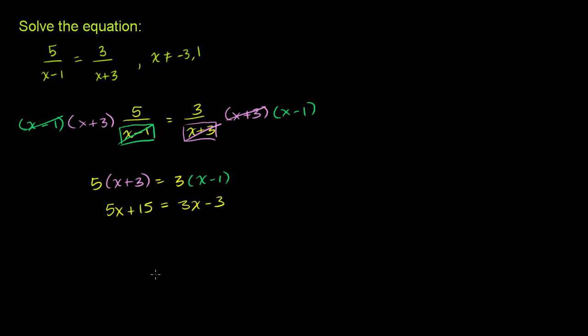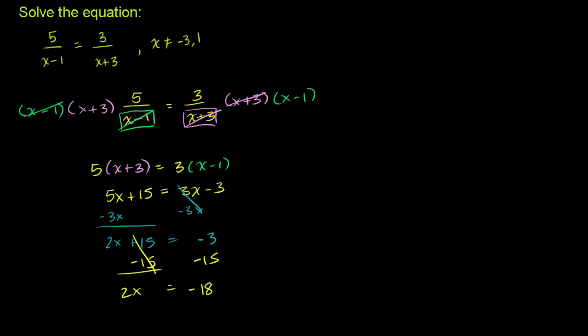Now let's get all the x's on the left-hand side. So let's subtract 3x from both sides. And we get 2x plus 15 is equal to negative 3. And then we can subtract 15 from both sides. And we're left with 2x is equal to negative 3 minus 15 is negative 18. Divide both sides of the equation by 2. And we're left with x is equal to negative 18 over 2, which is negative 9.